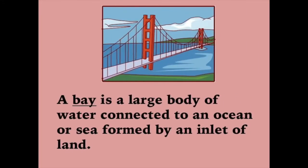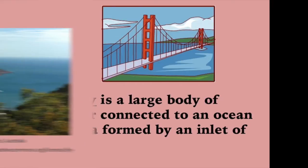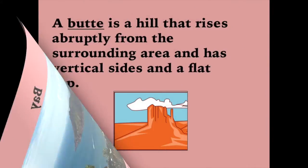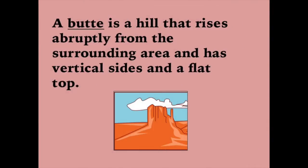A bay is a large body of water connected to an ocean or sea, formed by an inlet of land. A butte is a hill that rises abruptly from the surrounding area and has vertical sides and a flat top.